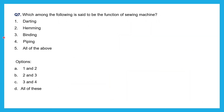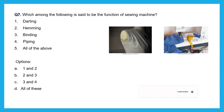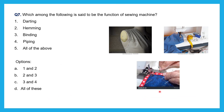Seventh question: Which among the following is a function of the sewing machine — darting, hemming, binding, piping, or all of the above? Darting involves folding the cloth to give a pleat-like appearance, adding ease and beauty to the fabric. Hemming finishes the raw edges by stitching them. Binding also closes raw edges but uses a different colored fabric for a decorative effect. Piping finishes raw edges with a cylindrical, pipe-like effect. All these can be done with a sewing machine, so the answer is all of the above.